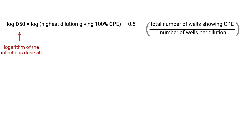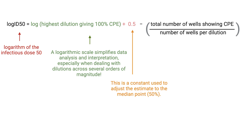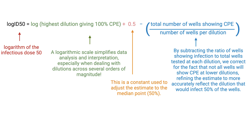Spearman-Kärber uses a straightforward computational formula that directly considers the infected wells at each dilution without requiring interpolation between doses. In this equation, to calculate the logarithm of the infectious dose required to cause a cytopathic effect in 50% of wells, we take the logarithm of the highest dilution yielding 100% CPE. The use of the logarithm places the dilution scale on a logarithmic basis, making it easier to manage exponentially varying dilutions. We then add 0.5 to our calculation. This constant helps ensure our estimate accurately reflects the middle value, where 50% of the data points are above and 50% are below. In the final part of the equation, we subtract the ratio of wells showing infection to the total wells tested at each dilution. This helps accurately pinpoint where the virus infects half of the well population.